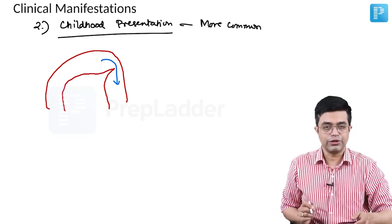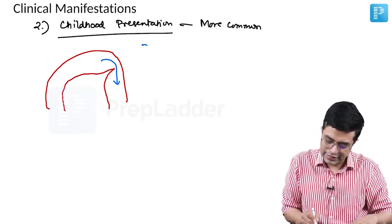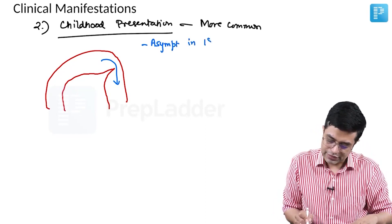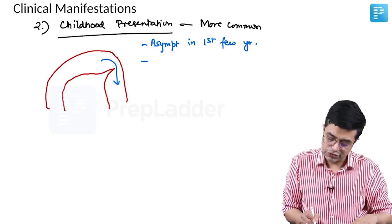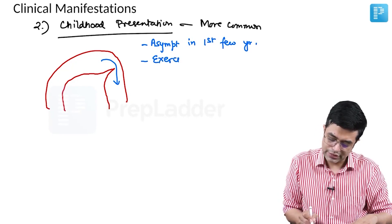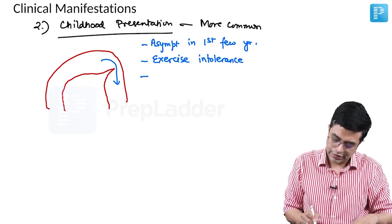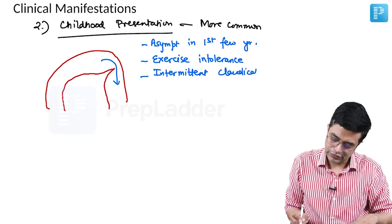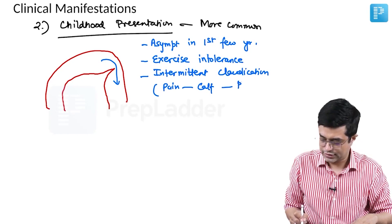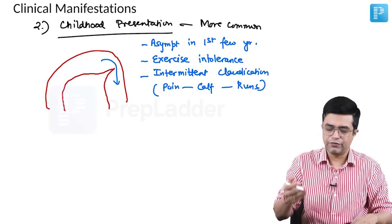Key points about childhood presentation: first, it is more common. Second, it is usually asymptomatic in the first few years of life. Later it manifests with features of exercise intolerance and intermittent claudication-like symptoms — pain in the calf muscles when the child runs, which is relieved when the child rests.